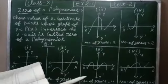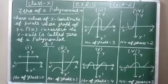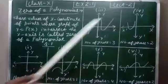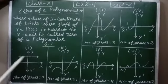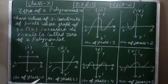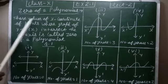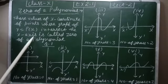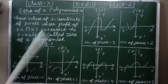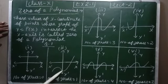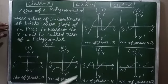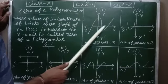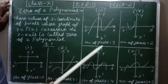In Exercise 2.1 we have only one question with six parts, and we make graphs for all six parts. In the first part, the graph is not touching the x-axis, so the number of zeros is zero. Recalling the definition: those values of x where the graph of y = p(x) intersects the x-axis are the zeros. In the second part, the graph intersects the x-axis at only one point, so the number of zeros is one.